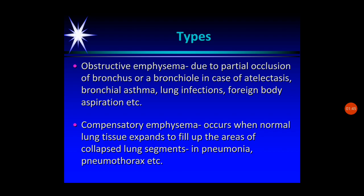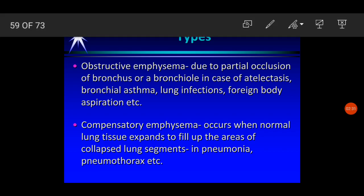Compensatory emphysema occurs when normal lung tissue expands to fill up the areas of collapsed lung segments. It occurs in pneumonia, pneumothorax, etc. The normal tissue tries to compensate for the affected part by increasing its expansion, but over time this normal tissue also ruptures due to its increased function to compensate the abnormal or involved areas.